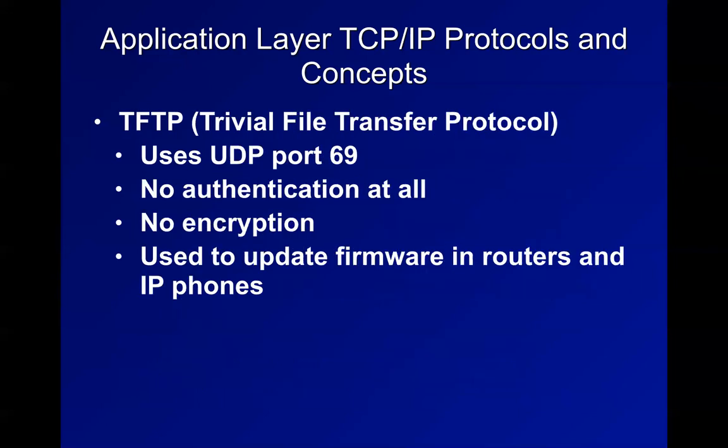TFTP, trivial file transfer protocol, is used to update IP phones and Cisco routers over a LAN. It has no authentication at all - you can make a rogue TFTP server, reboot IP phones, and send up poison firmware. It was one of those protocols like Telnet that was supposed to be used only over one wire, but was then ported to a LAN or WAN and is far too insecure to be trusted on a WAN.